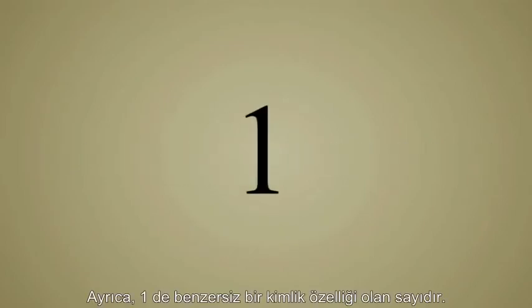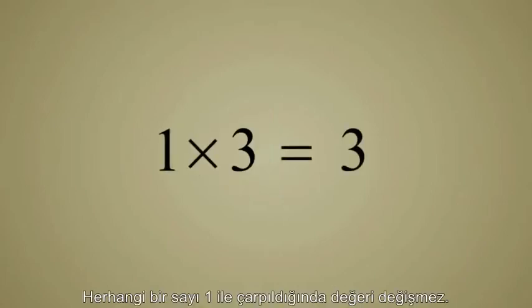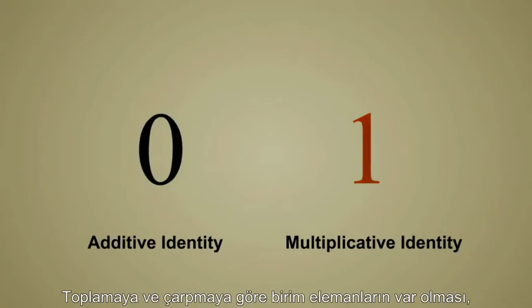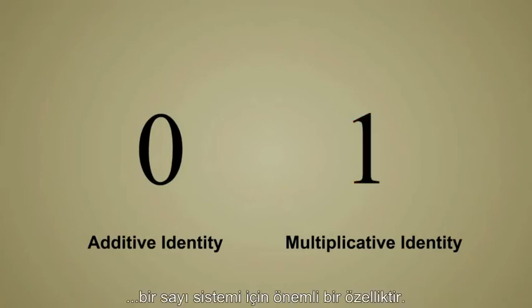One is also a number with a unique identity property. When any number is multiplied by one, its value is unchanged. So one is known as the multiplicative identity. The existence of a number which is an additive identity and a number which is a multiplicative identity is an important property for a number system.